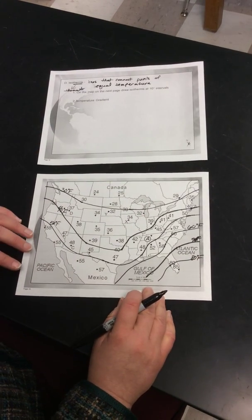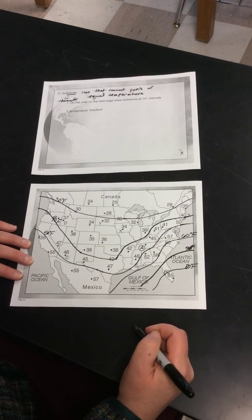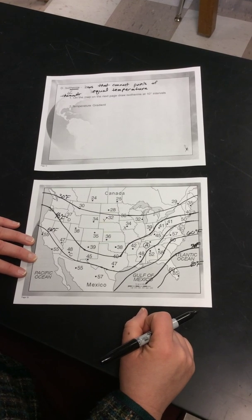And then our 80 would be here. So we have these lines - isotherms connecting the points of equal temperature. We'll be practicing more of this in class.